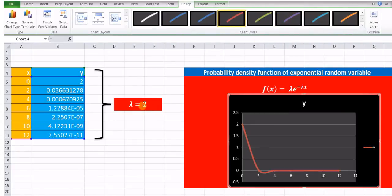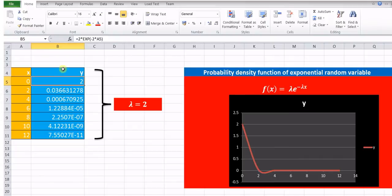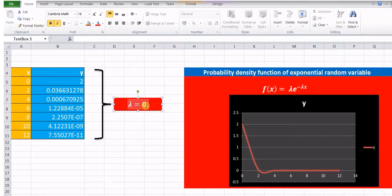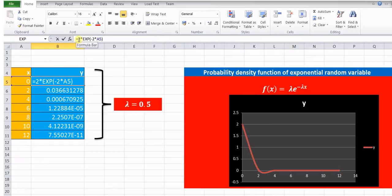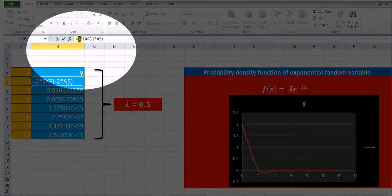Now, suppose we want to change this value of lambda instead of 2. Suppose we want this value to be 0.5. Then, in all these formulas, in place of lambda, it will be 0.5. So, in place of lambda, this is 0.5.